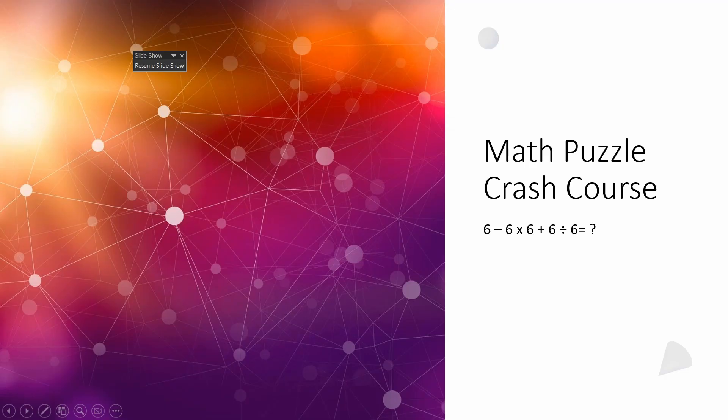Hello everyone, and welcome back to the Math Puzzle Crash Course. I have another little teaser puzzle here, just a little test of your knowledge of the order of operations convention. The problem we have today is 6 minus 6 times 6 plus 6 divided by 6 equals what?